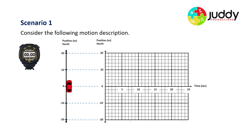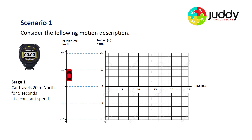So our first scenario, let's consider the following motion description. On the left hand side we have a vehicle with a scale measuring position in meters north of our reference starting point. Stage one: the car travels 20 meters north for five seconds at a constant speed. That takes five seconds, and here's the first section of our graph — we started at a position of zero and over five seconds traveled 20 meters.